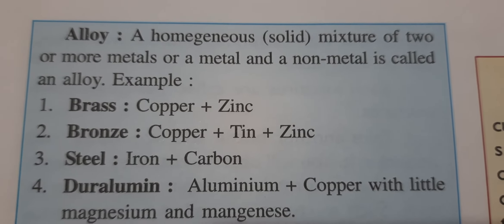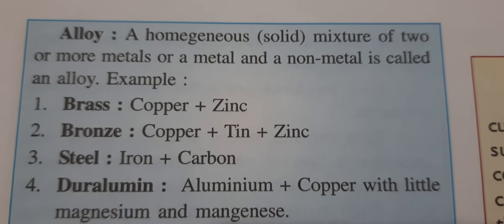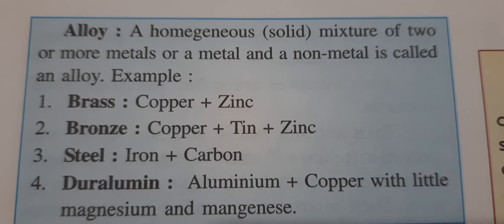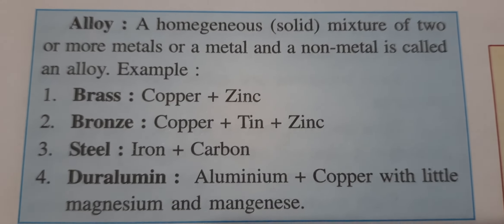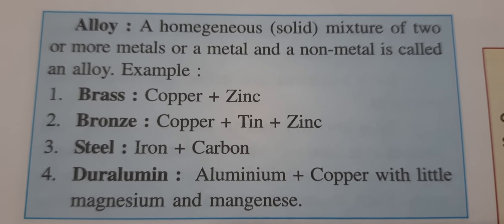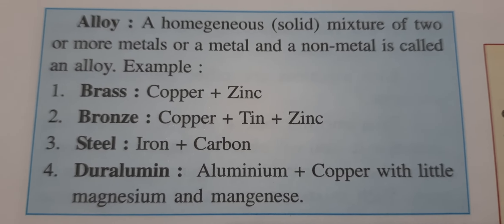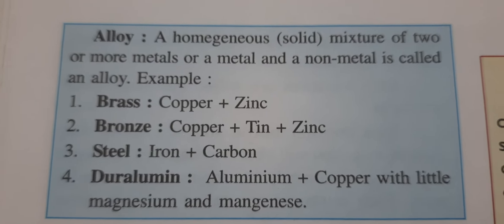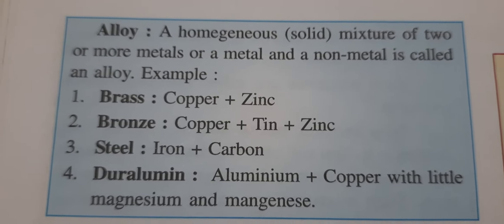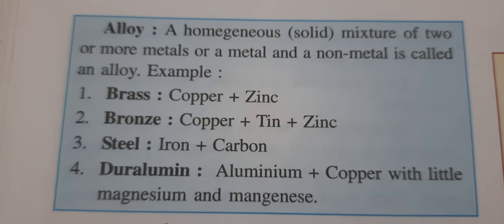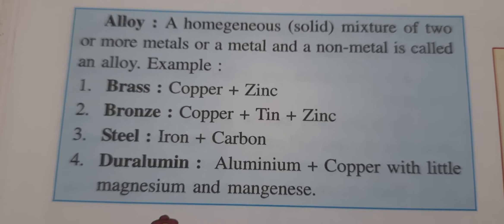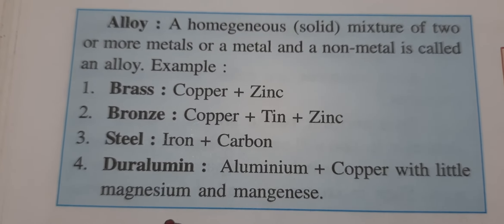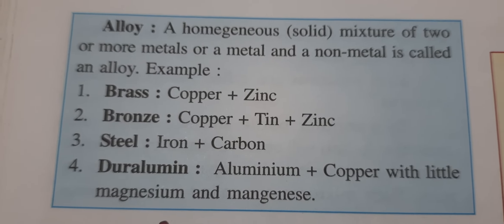A homogeneous mixture of two or more metals, or a metal and a non-metal, is called an alloy. When we mix two metals together, or one metal and one non-metal, the result is an alloy. It is a homogeneous mixture because if we look at an alloy, we cannot differentiate which metals or non-metals are mixed in it.